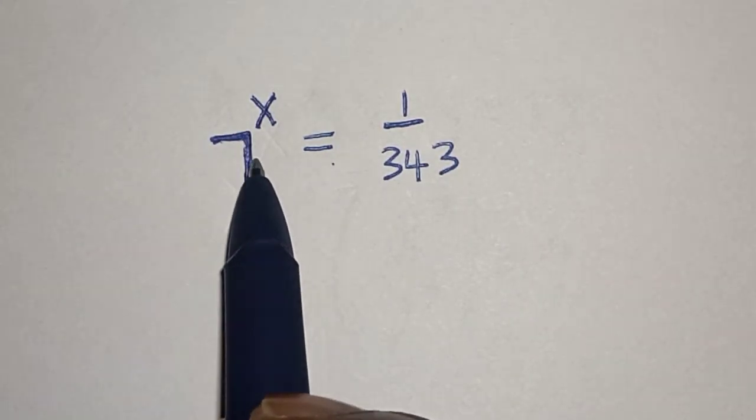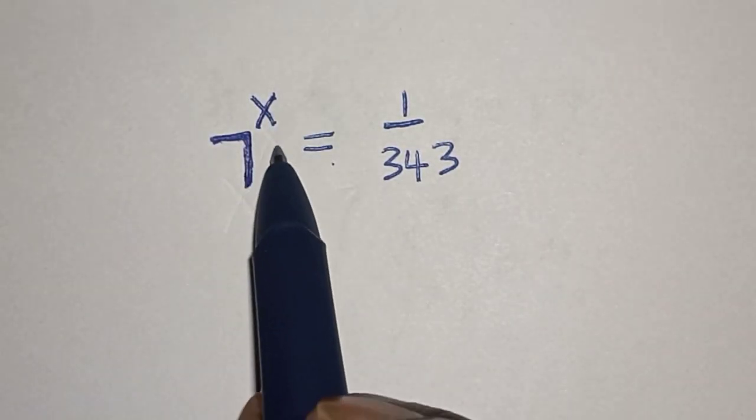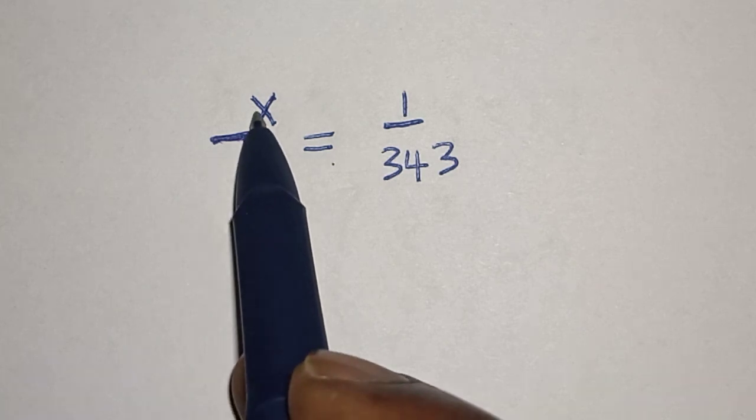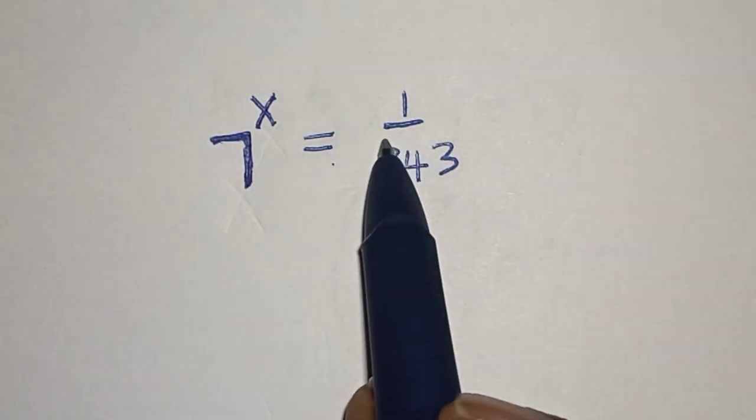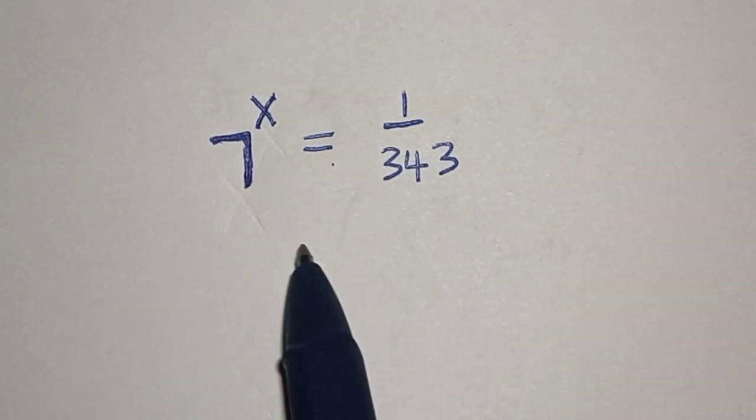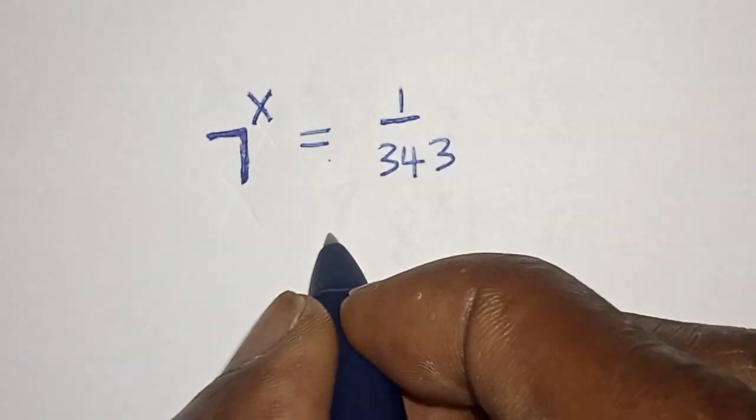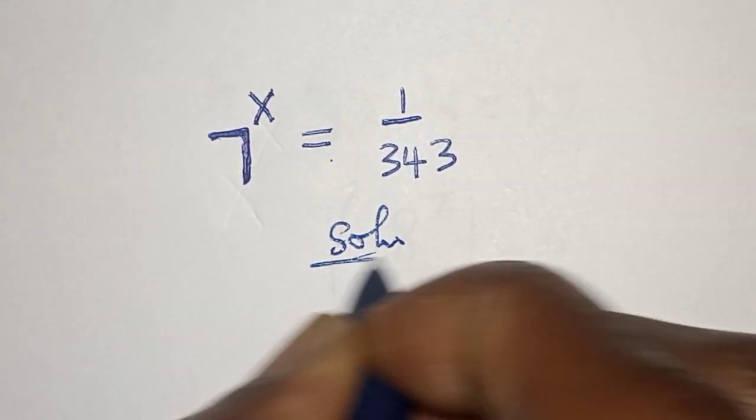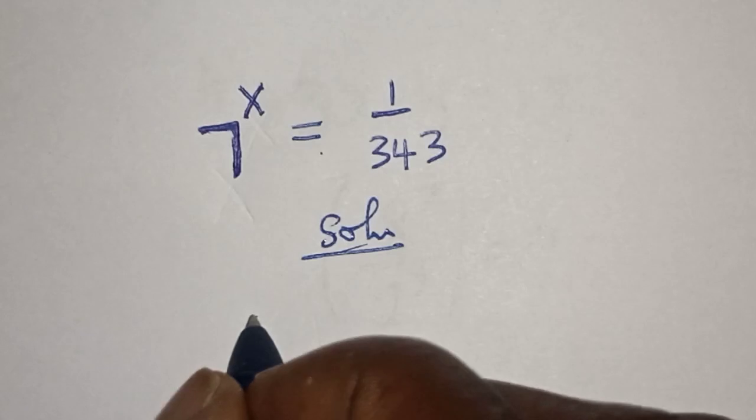Hello, welcome to Magic. In this class we want to find the value of x from this equation: 7 raised to power x is equal to 1 divided by 343. Like, share, comment and subscribe. Solution: we have 7 raised to power x is equal to 1 over 343.